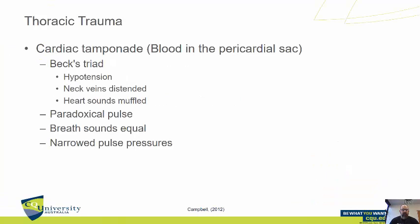Cardiac tamponade is blood in the pericardial sac. There is a fibrous sac that surrounds the heart, and between the heart and that fibrous sac we get a filling of blood. That sac fills up with blood and impedes the heart's ability to function correctly.